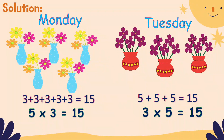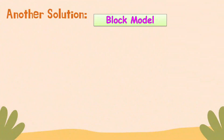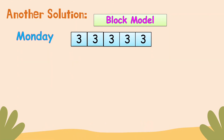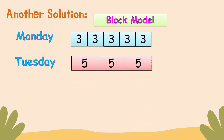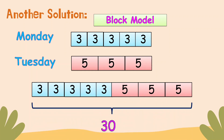Do you notice something with the multiplication sentences? The total number of flowers is 30. We can also use a block model: each block represents three, and there are five blocks for Monday — that's 15. For Tuesday, each block represents five and there are three blocks — also 15. So the total is 30.